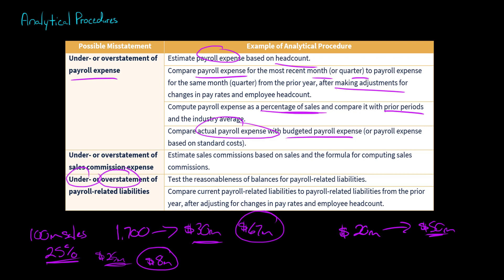In terms of under or overstatement of payroll-related liabilities, the auditor could compare any payroll-related liabilities — for example, salaries payable or payroll tax liabilities — to balances from the year before, after making adjustments for pay rates or employee headcount, and identify significant discrepancies. For example, if payroll tax liabilities this period were $17 million but the prior period was $40 million, that's a pretty significant difference worth investigating further.